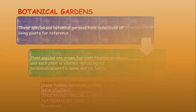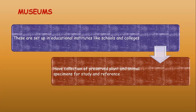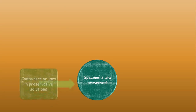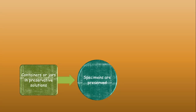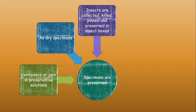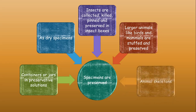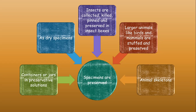Museums are set up in educational institutions like schools and colleges and have collections of preserved plants and animal specimens for study and reference. Specimens are preserved in containers or jars in preservative solutions or as dried specimens. Insects are collected, killed, pinned, and preserved in special insect boxes. Larger animals like birds and mammals are stuffed and preserved, and museums also include animal skeletons.